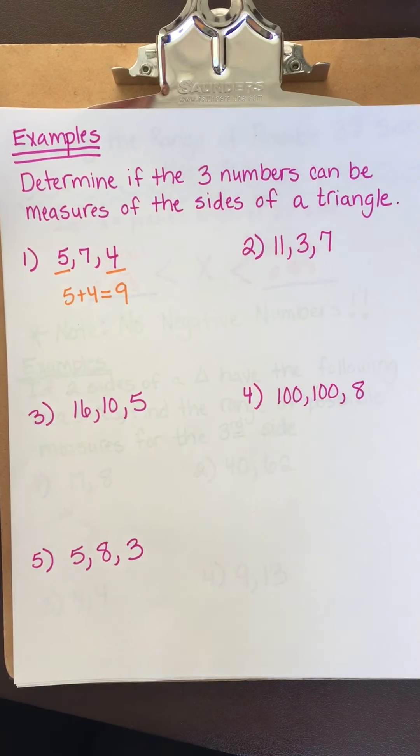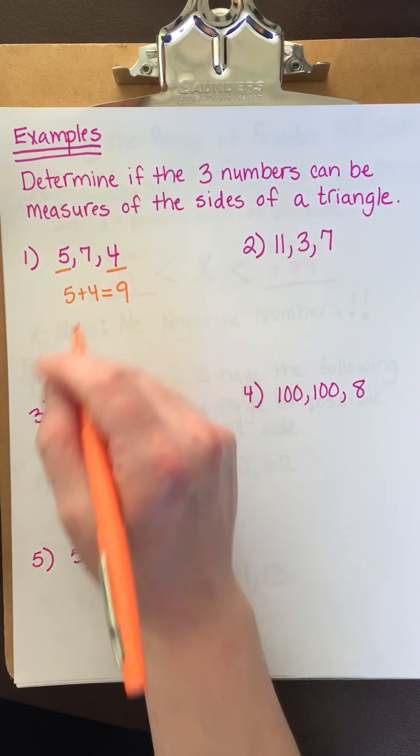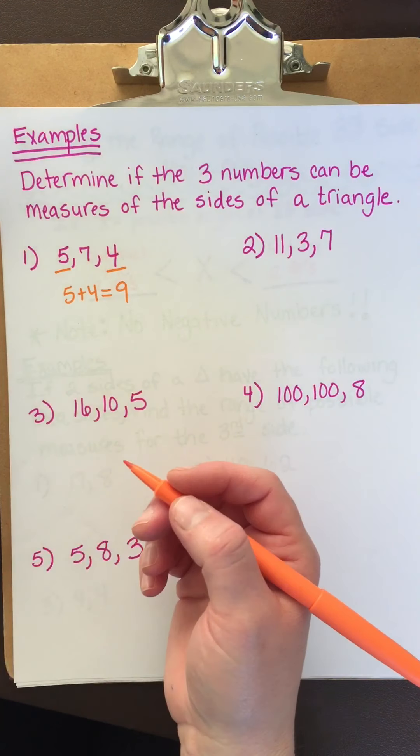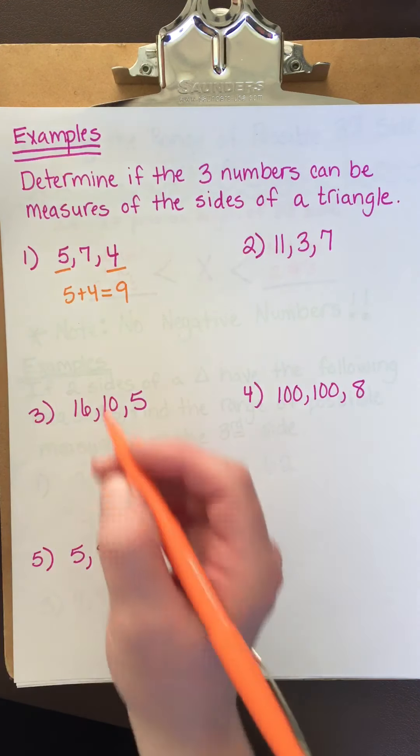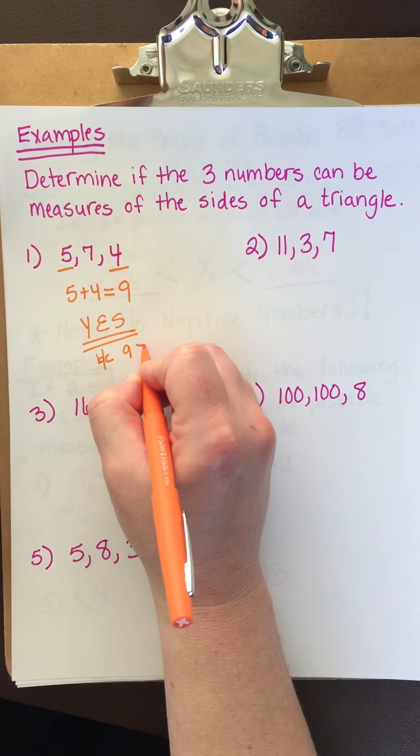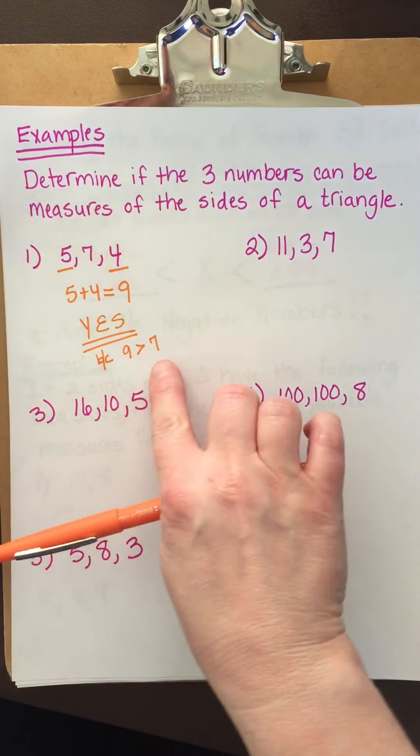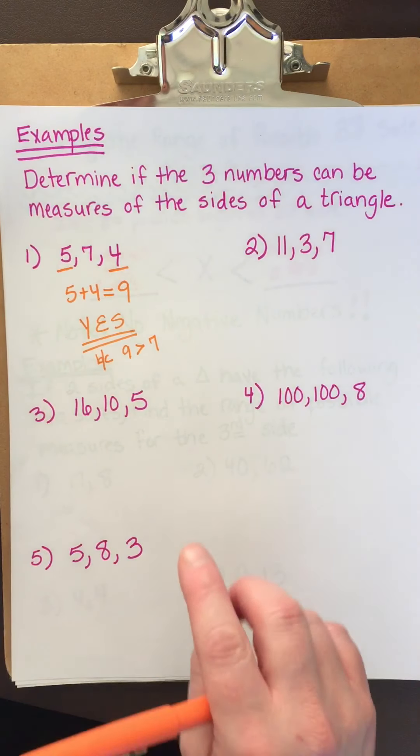5 plus 4 equals 9. Then you ask yourself, is 9 bigger than 7? Heck yeah. So can this be a triangle? Yes. It can totally be a triangle. Why can it be? Because 9 is bigger than 7. You don't have to write all that. I'm just explaining it.